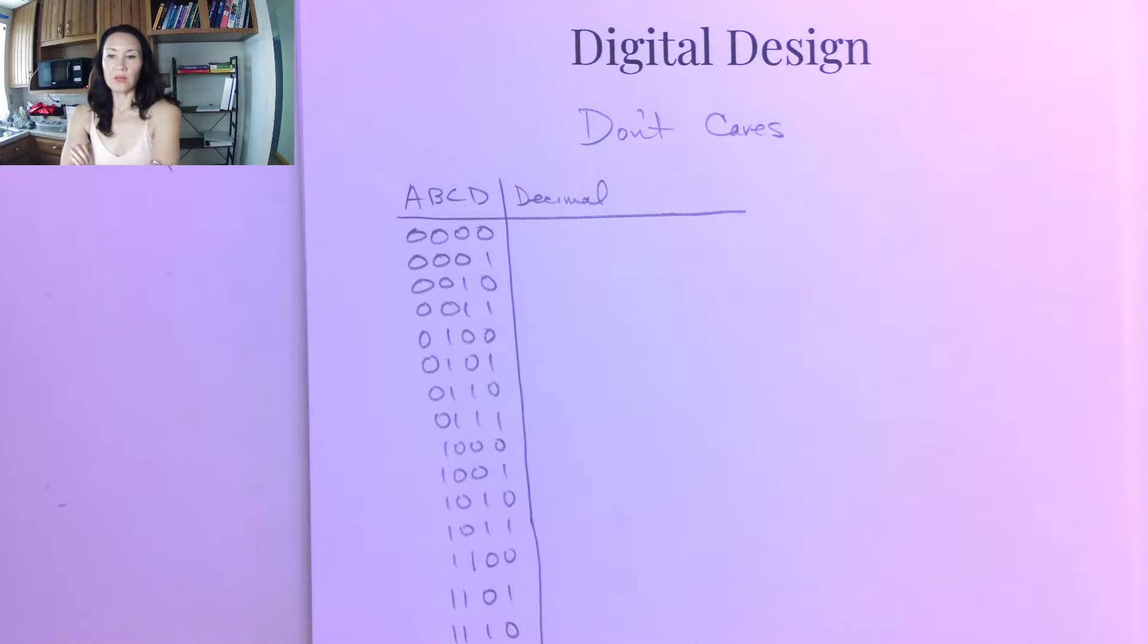Sometimes in our digital logic functions, we have outputs that are unspecified. They're not clearly a 1 or a 0 because either they don't make sense or that input combination is never possible.